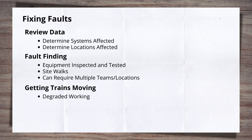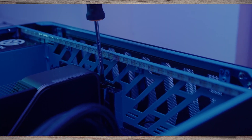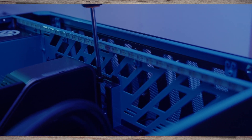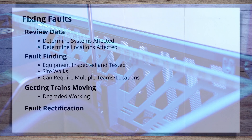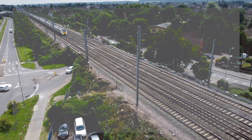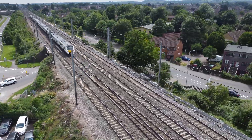Once the root cause of the issue is identified, repairs or rectification works are undertaken. This can be as simple as removing an obstruction, to changing components, right up to running out hundreds of metres of new cables. It may be done straight away, or a temporary fix may be done with a plan to come back during the night to complete the full fix. Then it's time to start running trains again and recovering the service back to normal.